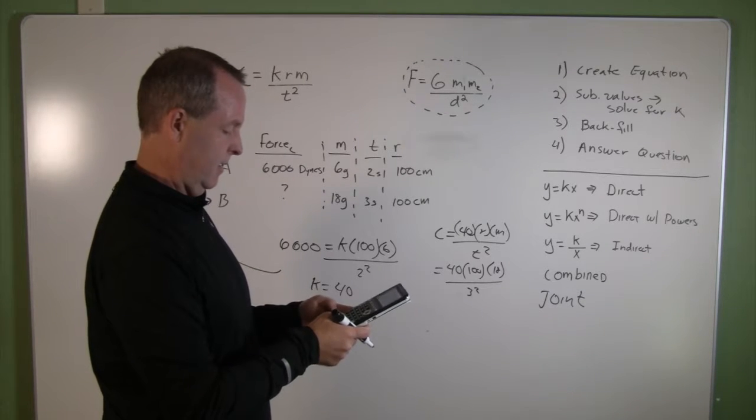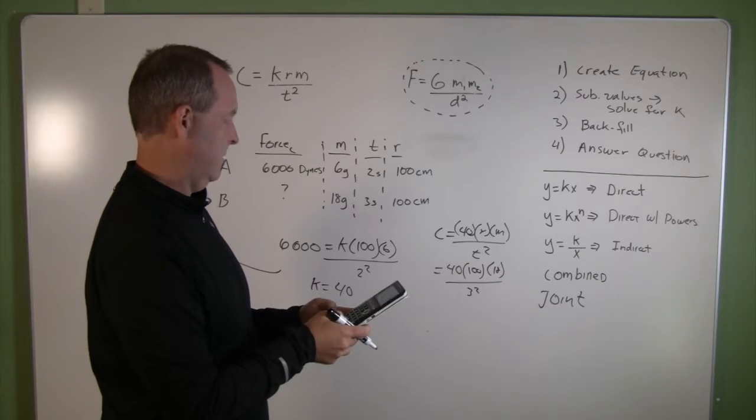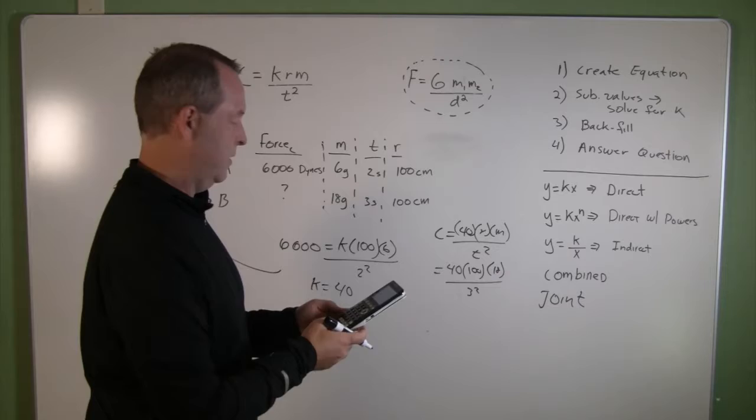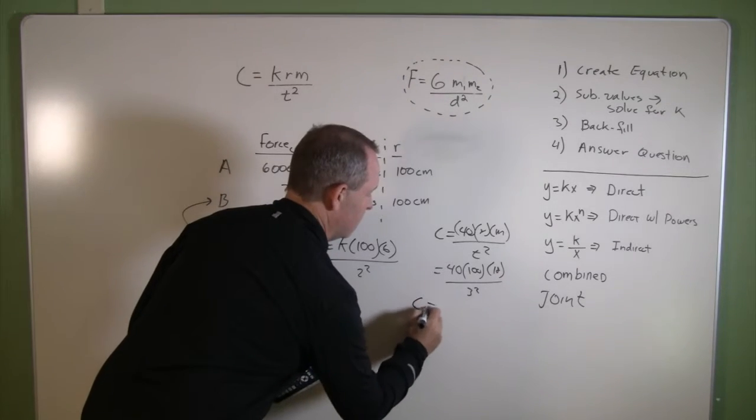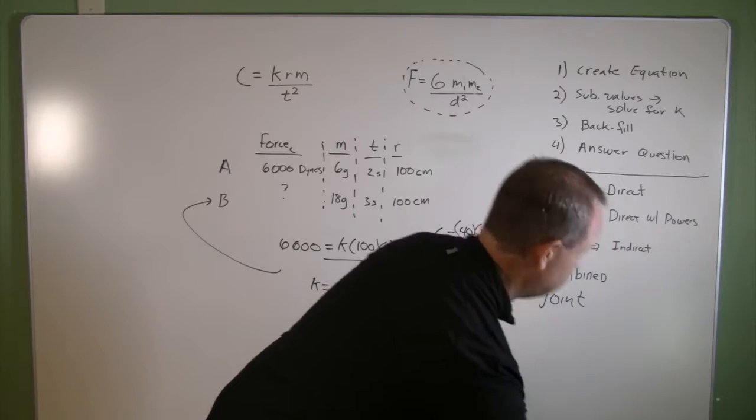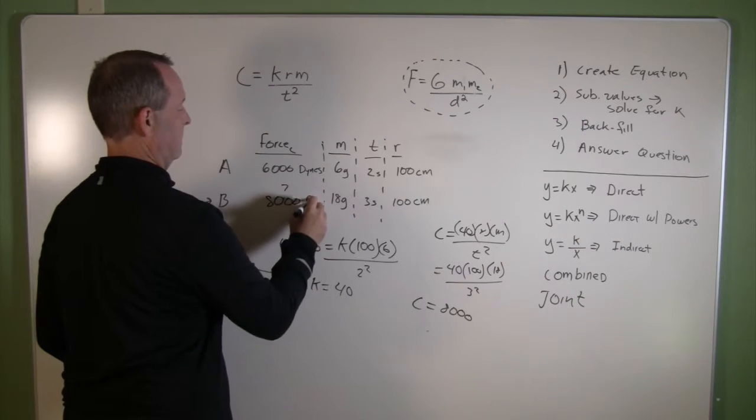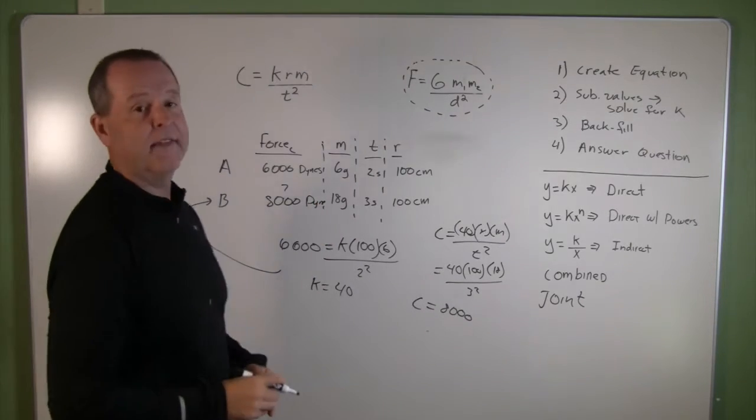40 times 100 times 18 divided by 9 produces a force of 8,000 dynes.